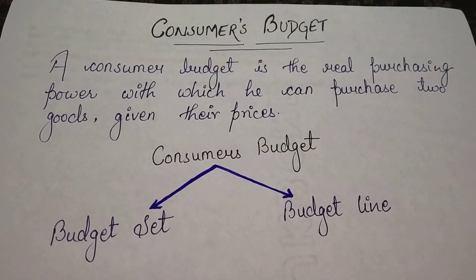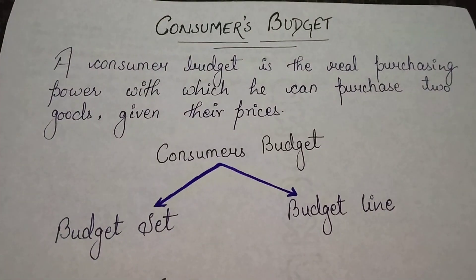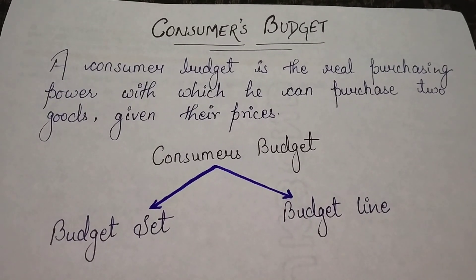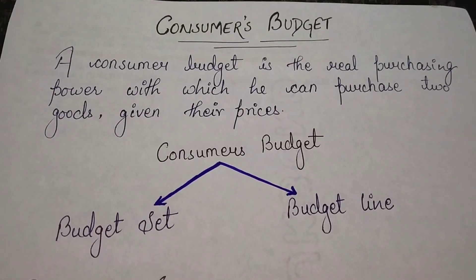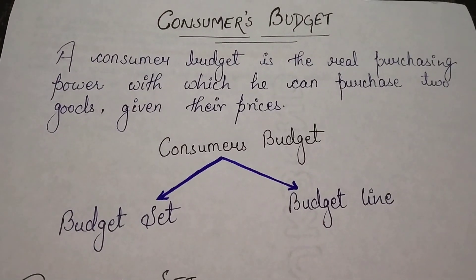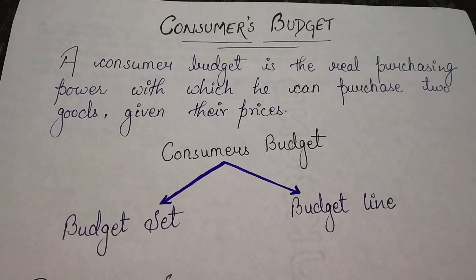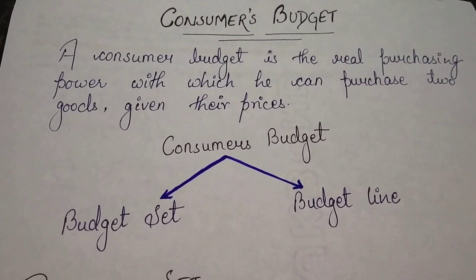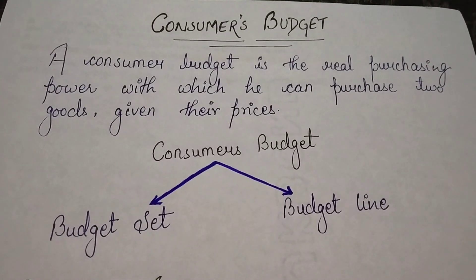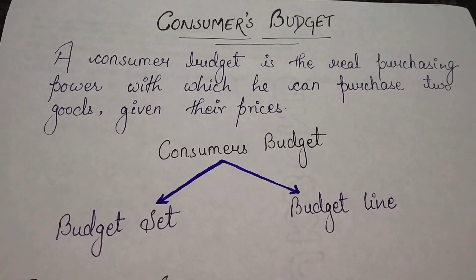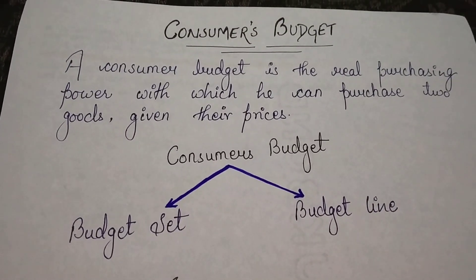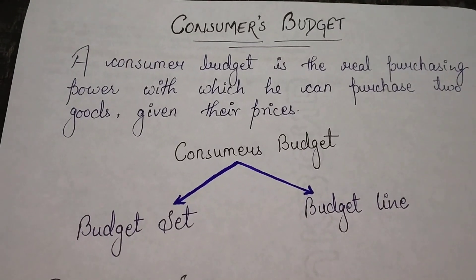Hey guys, today I'm back here to discuss about the most familiar word: budget. What is budget? Consider student life - suppose it's your birthday and you want to treat your friends. You decided to go to Domino's. Suppose you have a budget of thousand rupees. Within that thousand rupees you have to give them a treat, choosing from cold drinks and pizzas. You have to decide what quantity of pizza and cold drink to buy with that thousand rupees.